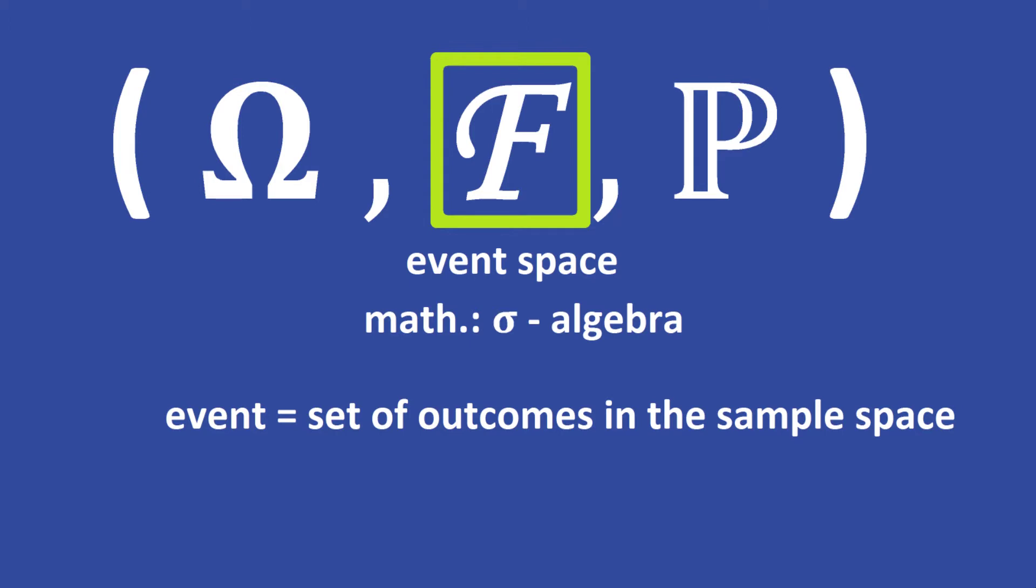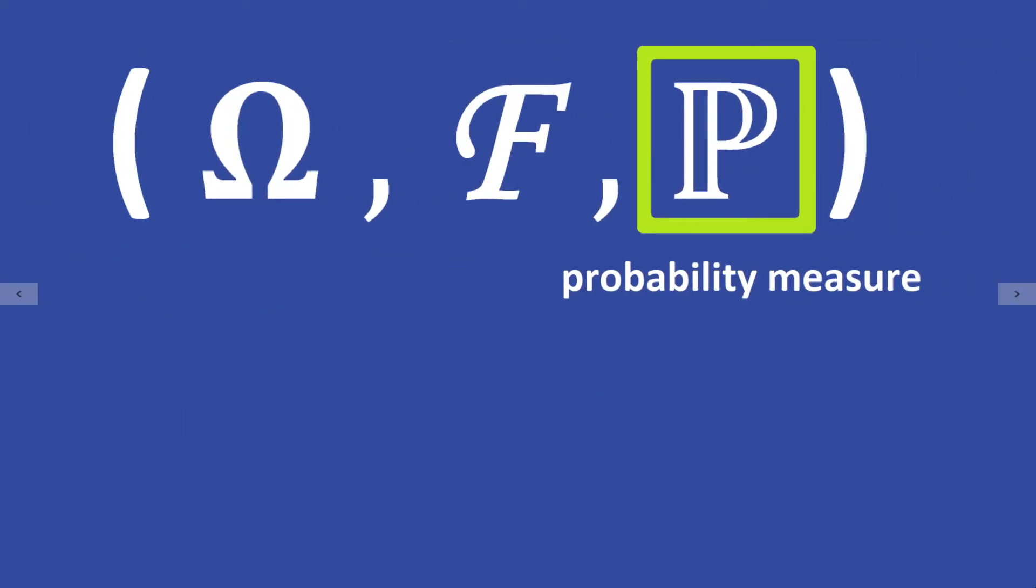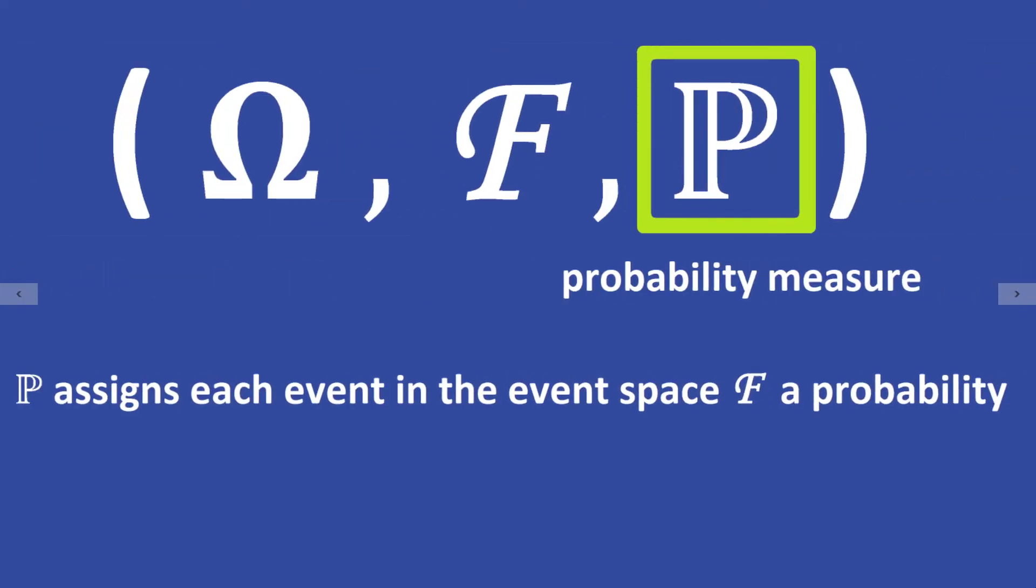The last element is a so-called probability measure P. The measure P assigns each event in the event space F a probability, which is a number between 0 and 1. I will show you the proper definition of a probability measure in a future video.